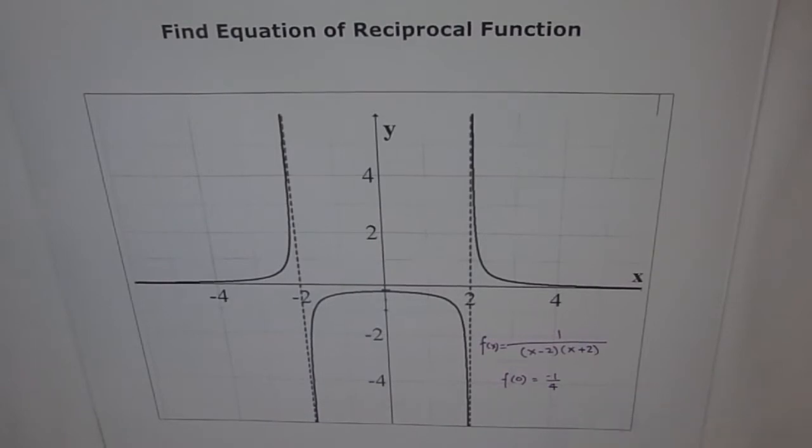Now, you can recheck. x minus 2 gives me a vertical asymptote at 2. x plus 2 gives me a vertical asymptote at minus 2, correct?